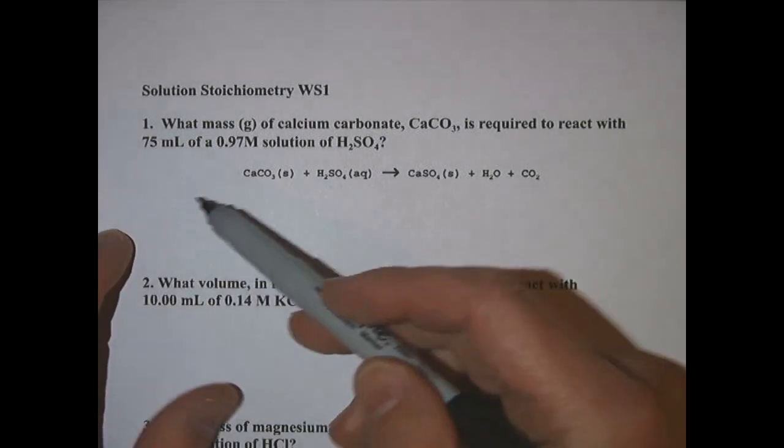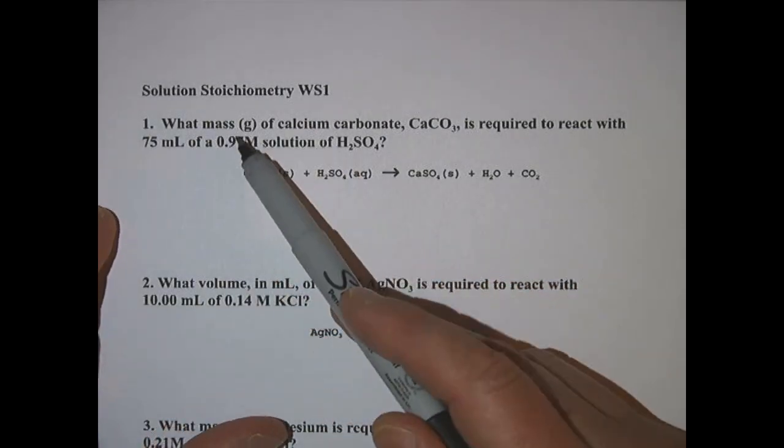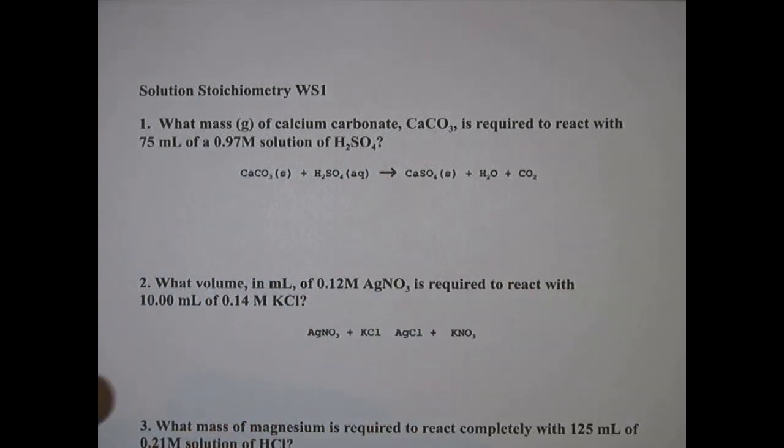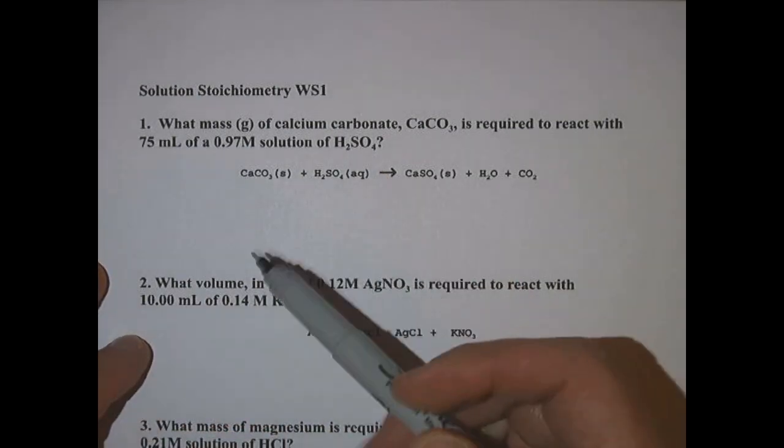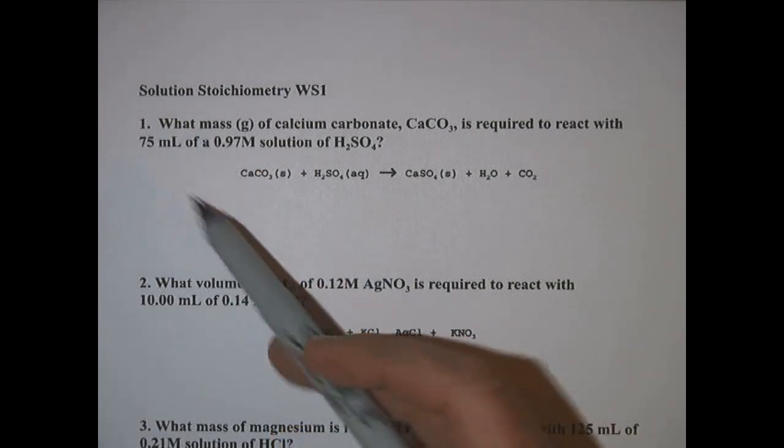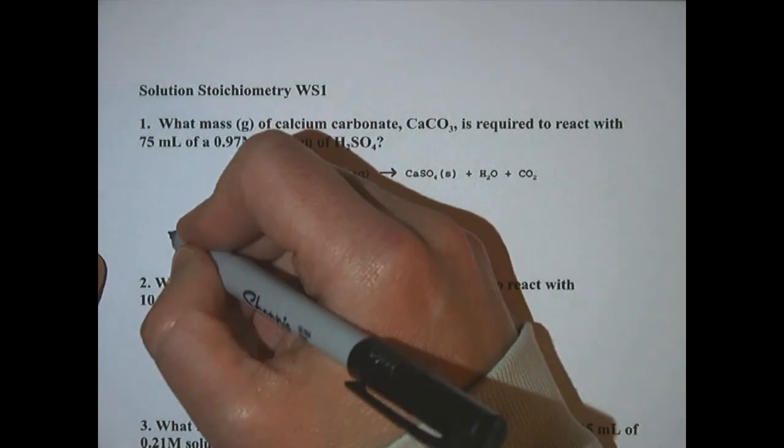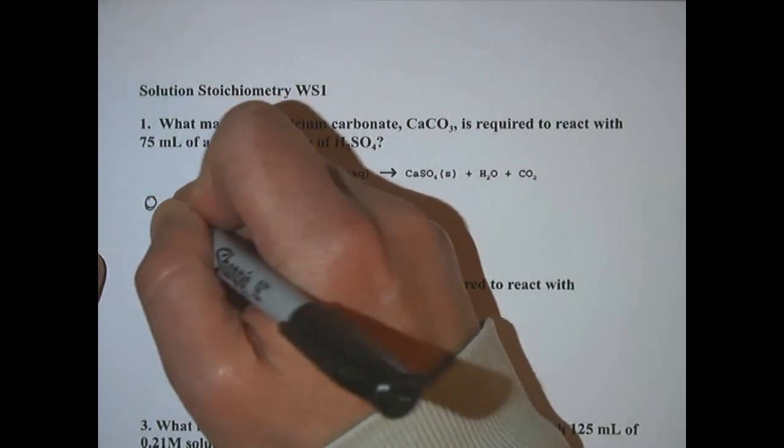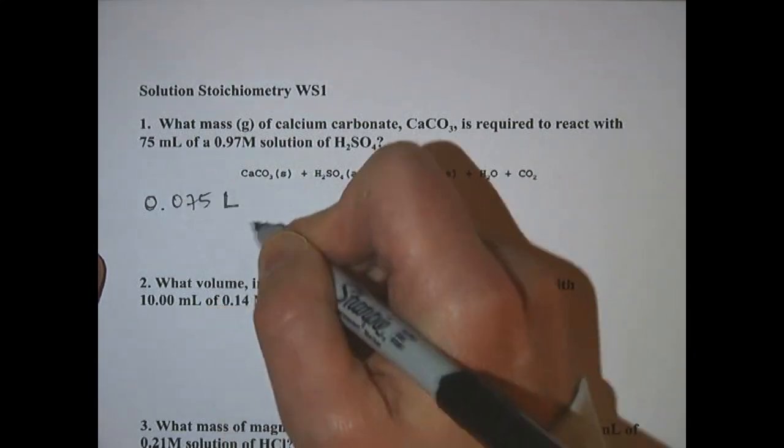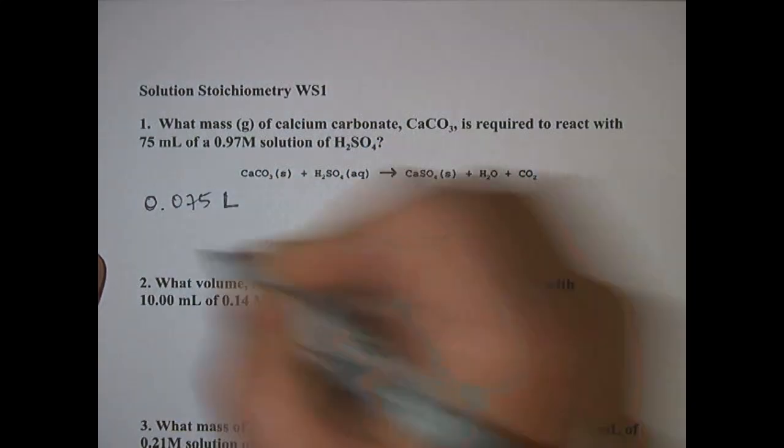In the first one it says what mass in grams of calcium carbonate, CaCO3, is required to react with 75 milliliters of a 0.97 molar solution of H2SO4. In this problem we want to end at grams and we're given milliliters, so we'll start there. So 0.075 liters, you gotta divide it by a thousand, of H2SO4.